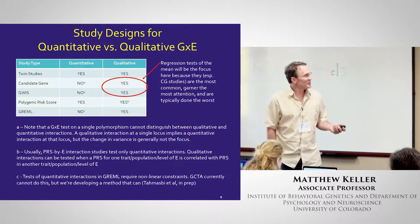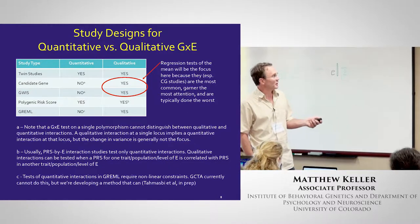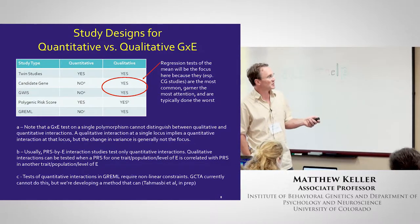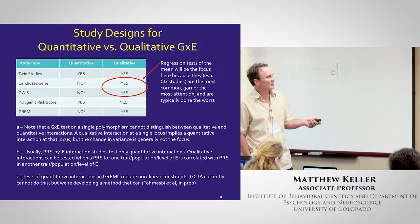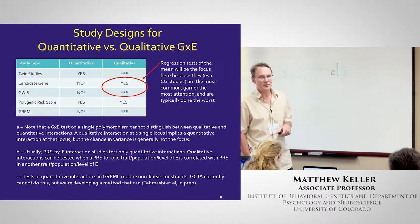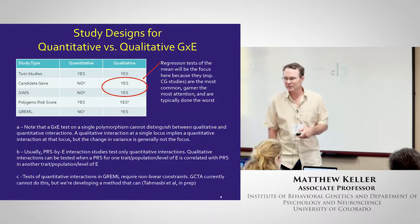I'm going to be focusing really on qualitative G×E for both candidate gene and GWIS designs, because they are the most commonly done, they garner the most attention in the literature, and they're often done the very worst.